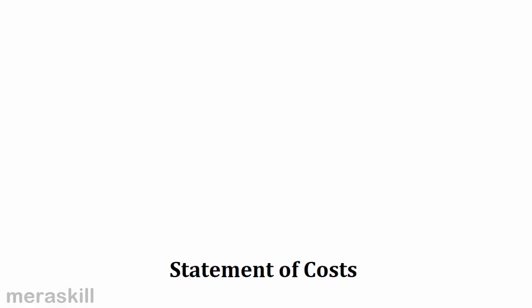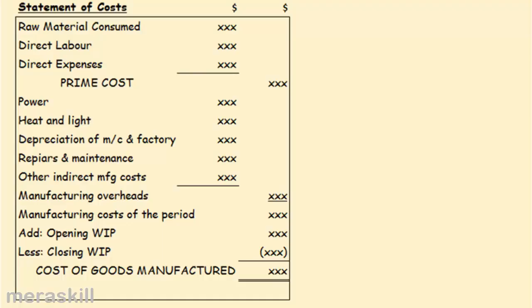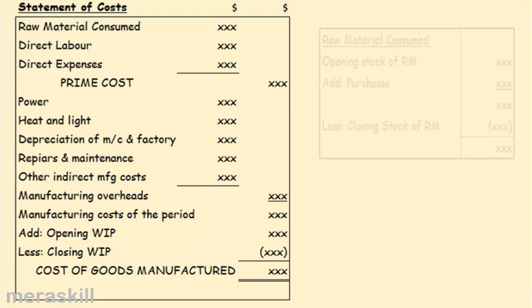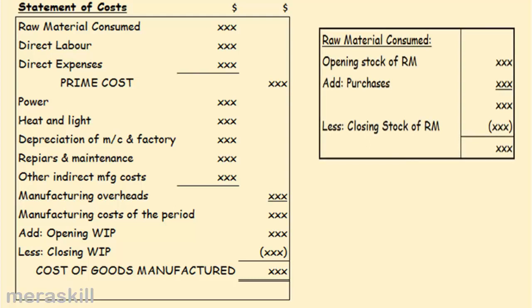Let us look at the Statement of Cost. This is how the Statement of Cost is structured. Raw material consumed — what is raw material consumed? I purchase raw material, but do I use all the raw material that I purchase? Not necessarily. I might have some of it left as inventory. So raw material consumed equals opening stock of raw material plus purchases minus closing stock of raw material.